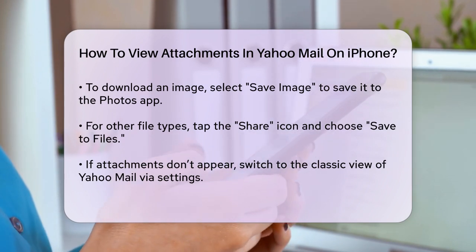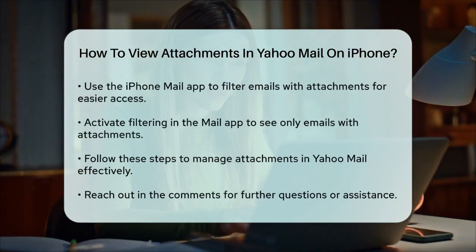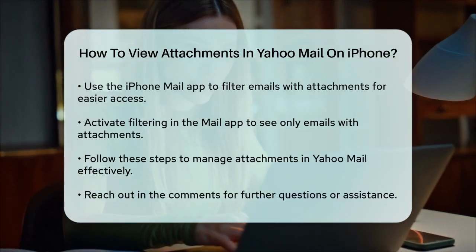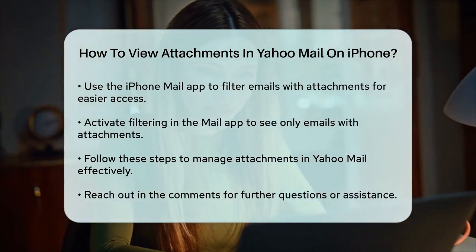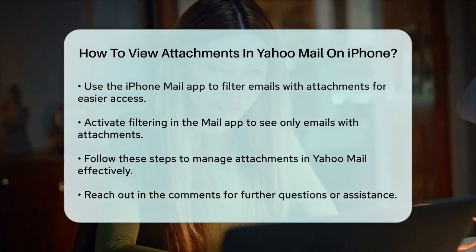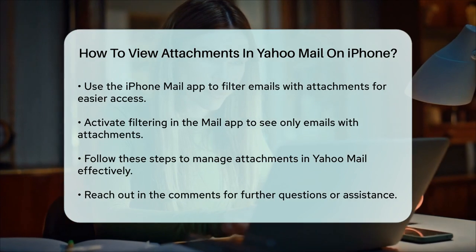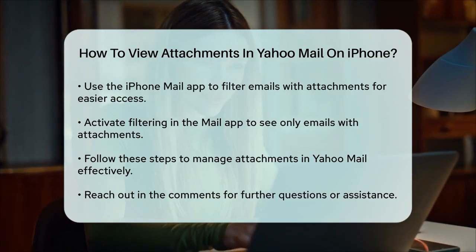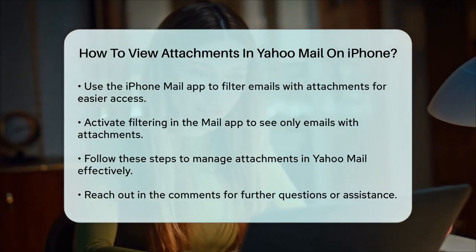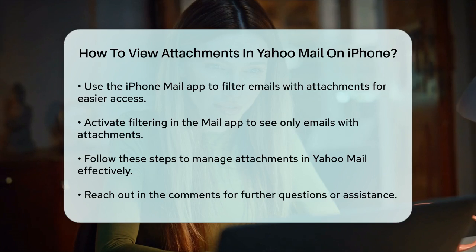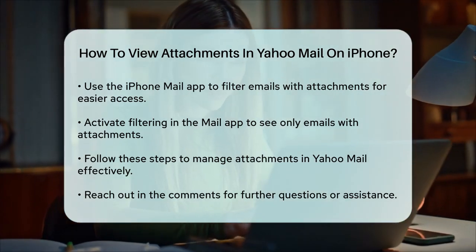Another useful tip is to use the Mail app on your iPhone to filter emails with attachments. While this doesn't directly solve viewing issues in Yahoo Mail, it can help you quickly find emails with attachments across all your accounts. In the Mail app, go to a mailbox, tap to turn on filtering, and then select filtered by followed by only mail with attachments.